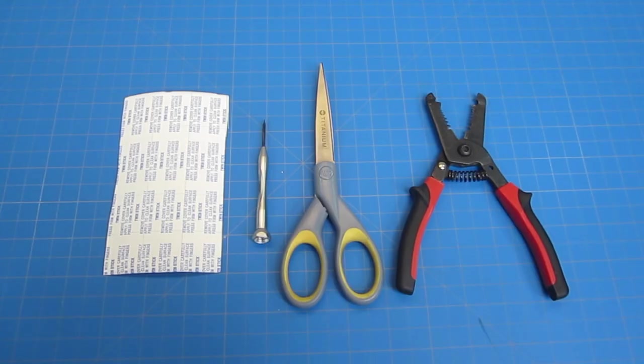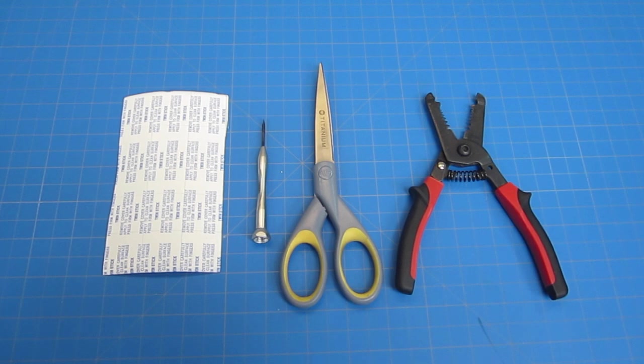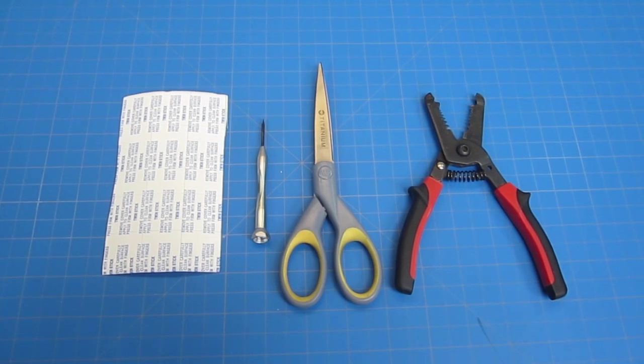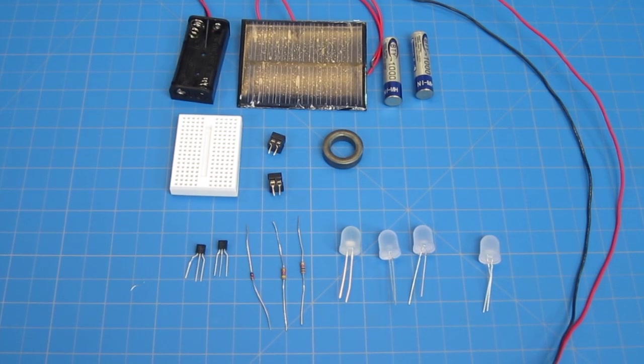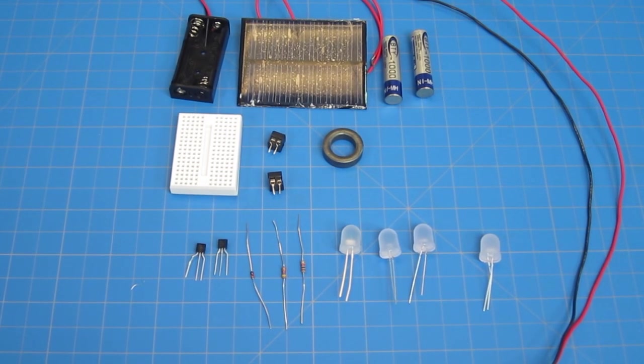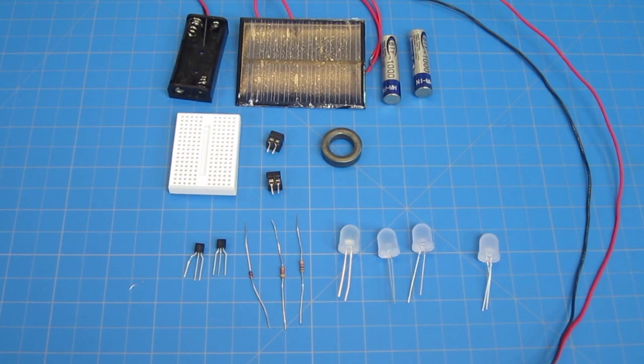For this project you'll need the following: double-sided foam tape, screwdriver, scissors and wire stripper, AAA battery holder, two rechargeable AAA batteries, a solar cell, a mini breadboard, and a metal torrid.